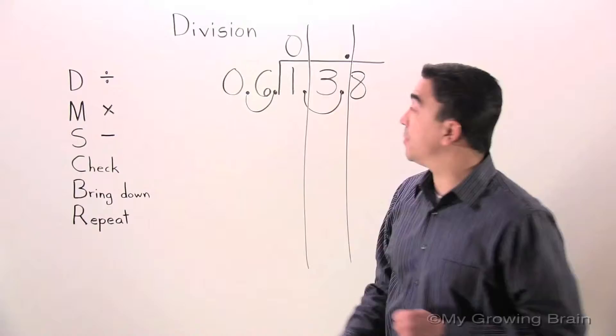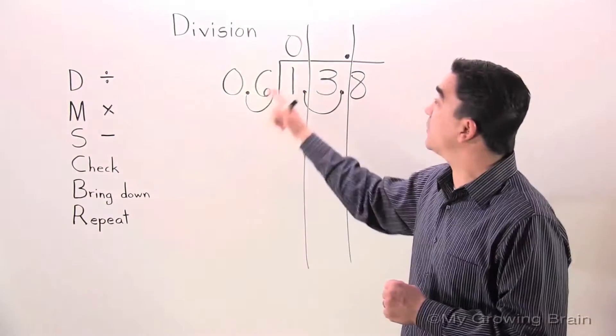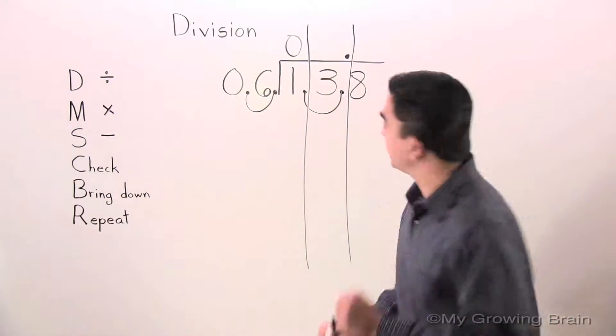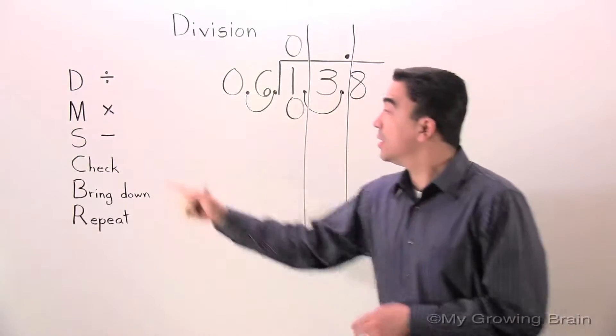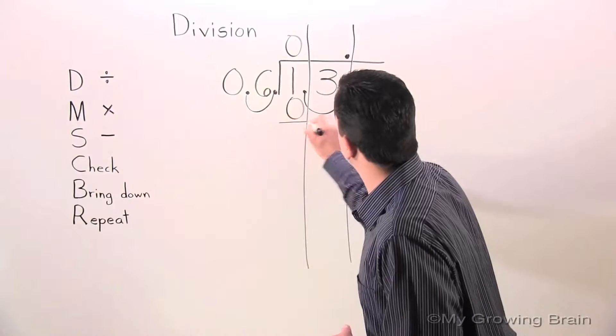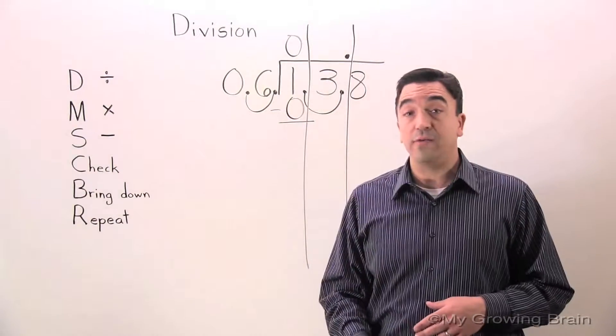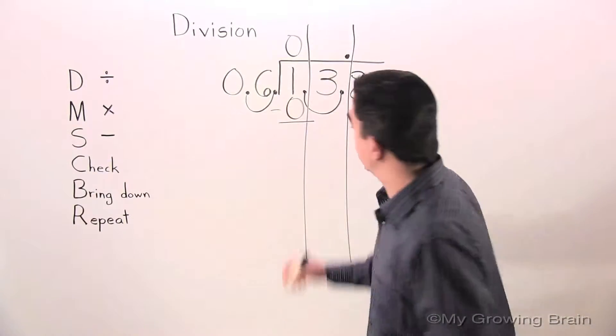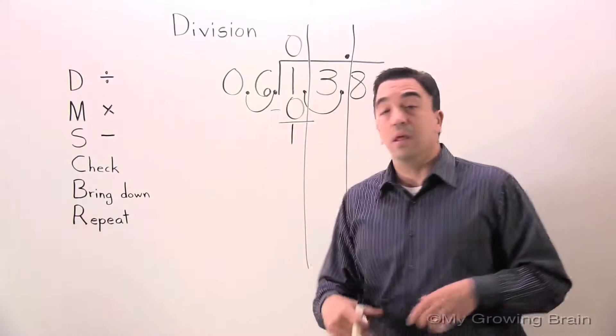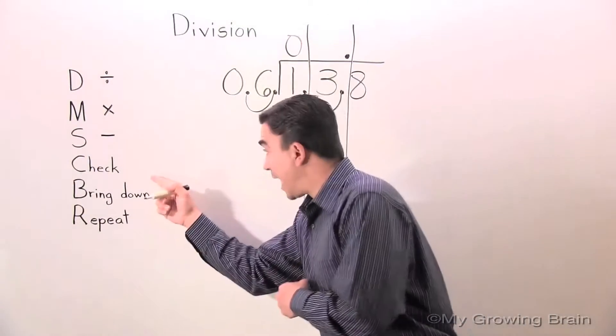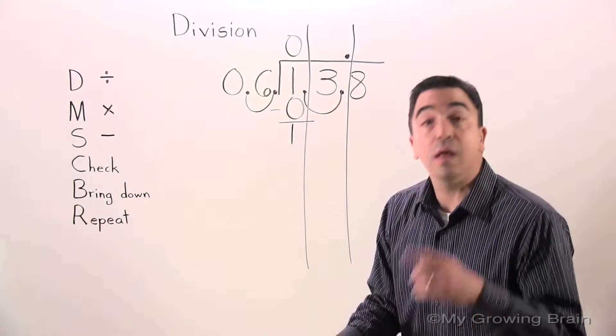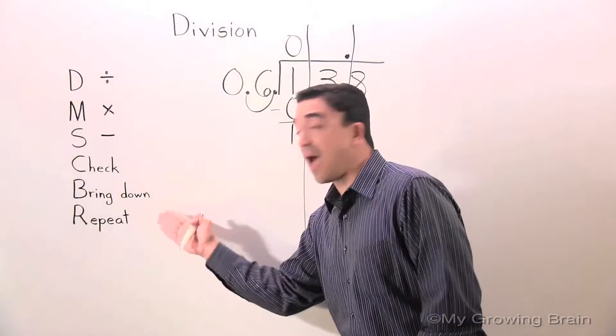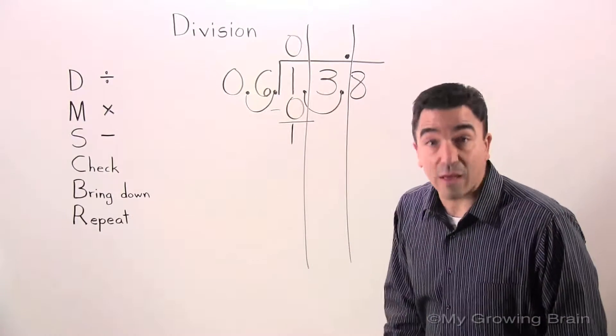Next step, multiply: six times zero, zero. Next step, subtract: one minus zero, one. Next step, check: one is less than six, keep on going. Next step, bring down. Bring down the three.